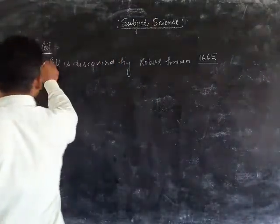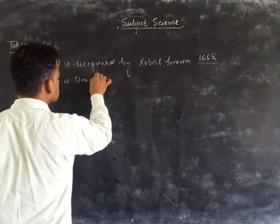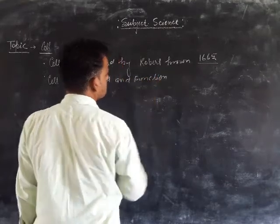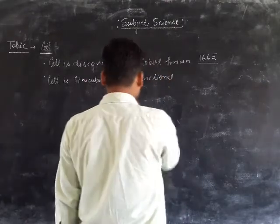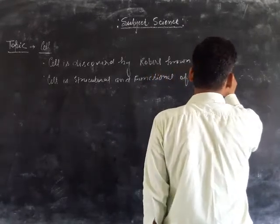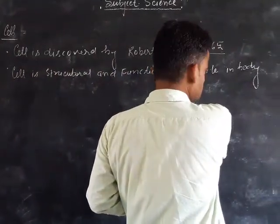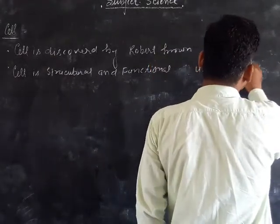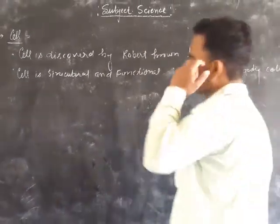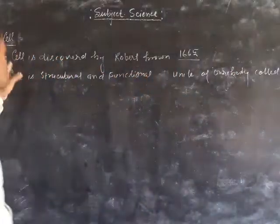Cell is the structure and consular unit of body which is called as cell. Cell is the structural and functional unit of body. The structural and functional unit of our body is called as cell.